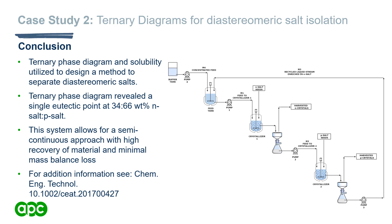To conclude case study two, we have shown how to build a ternary phase diagram and use solubility studies to facilitate the separation of diastereomeric salts in high purity and efficiency. A simple eutectic point at 34:66 weight percent N salt:P salt was observed, characteristic of diastereomeric systems. The schematic shown also demonstrates how amenable this process would be to a semi-continuous system. For more information on this specific case study, please refer to the linked paper.